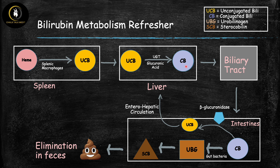Conjugation is done by the enzyme UGT, which tags on glucuronic acid to produce conjugated bilirubin. Conjugated bilirubin is water-soluble, so it can enter the liquid environment of bile and be eliminated through the biliary tract into the small intestines. From there, conjugated bilirubin is converted to urobilinogen by gut bacteria, and urobilinogen becomes stercobilin, which is then eliminated through feces — in fact, the brown color of stercobilin is what gives feces its brown color.